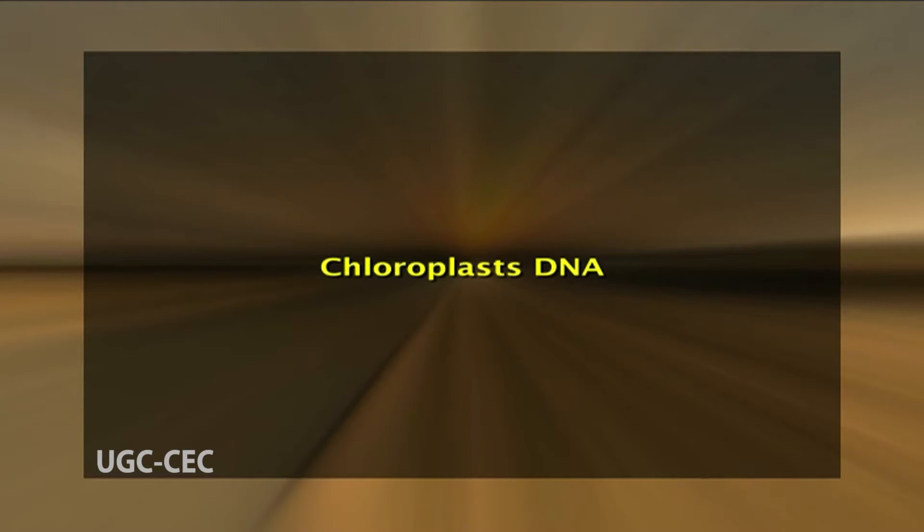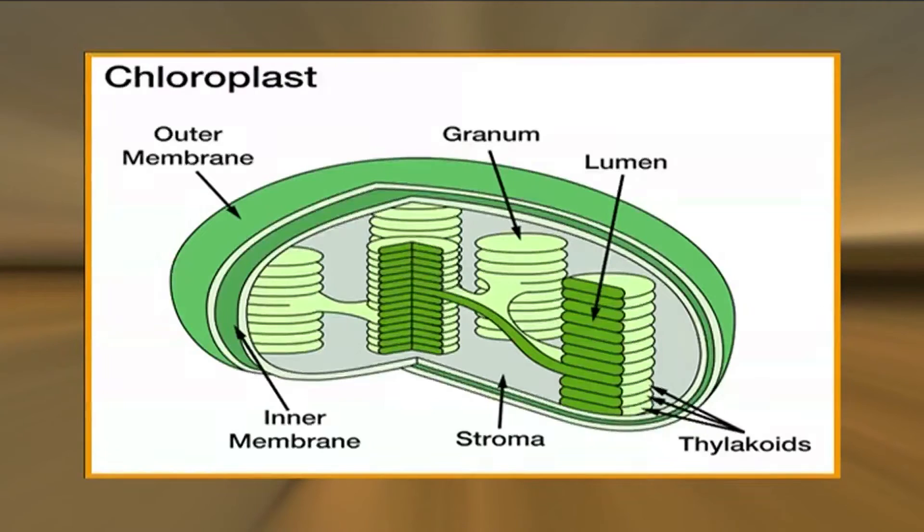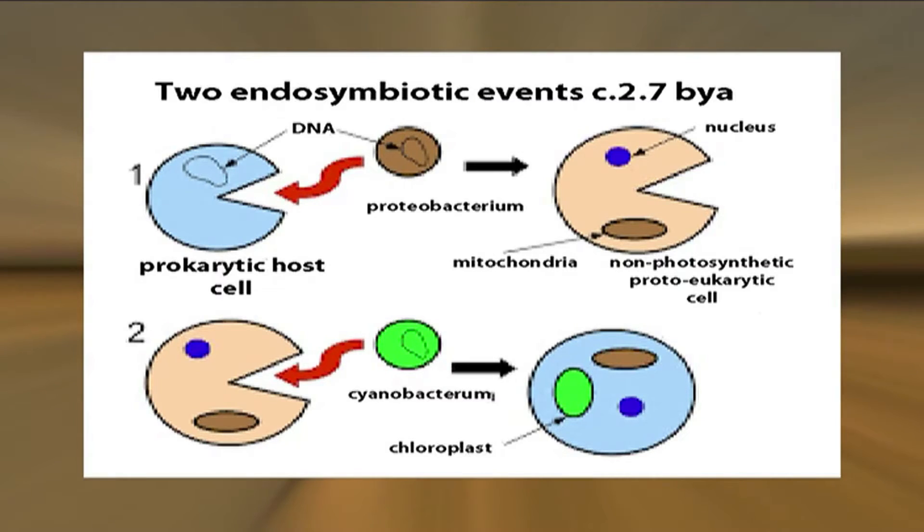Others likely play roles in poorly understood processes such as the control of mitochondrial shape or number and mitochondrial inheritance. Now moving to another part of the topic: chloroplast DNA. Chloroplasts, the organelles responsible for photosynthesis, are in many respects similar to mitochondria. Both chloroplasts and mitochondria function to generate metabolic energy. Both have evolved by endosymbiosis. Both contain their own genetic systems, and both replicate by division.